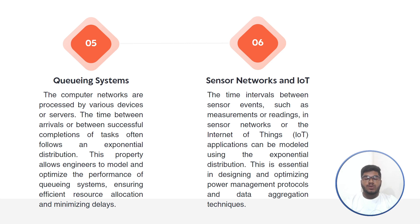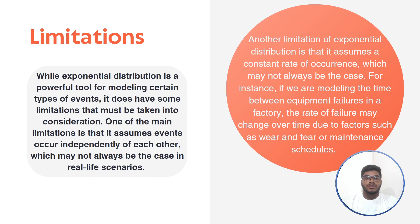There are also some limitations of the exponential distribution. While it is a powerful tool for modeling certain types of events, one main limitation is that it assumes events occur independently of each other, which may not always be the case in real-life scenarios. Another limitation is that it assumes a constant rate of occurrence — for instance, when modeling time between equipment failures in a factory, the rate of failure may change over time due to factors such as wear and tear or maintenance schedules.